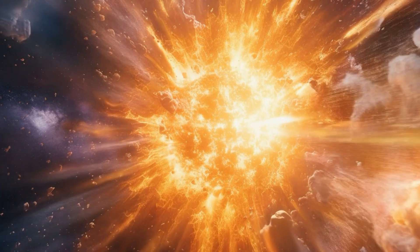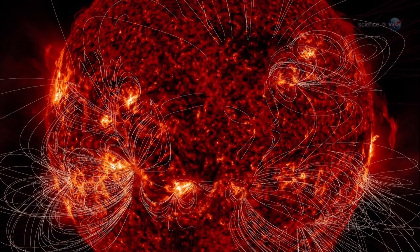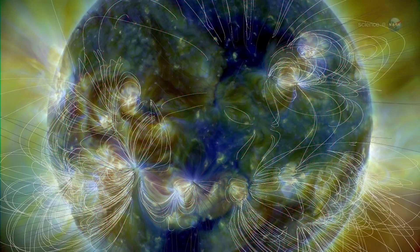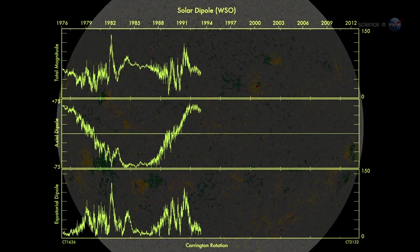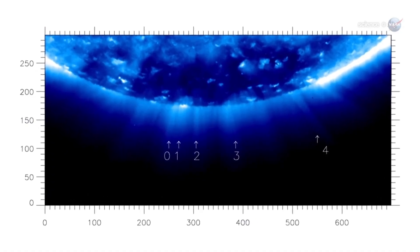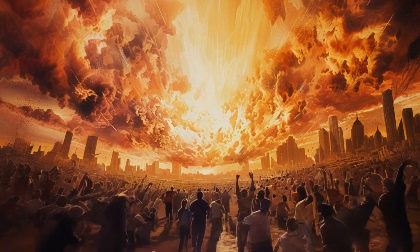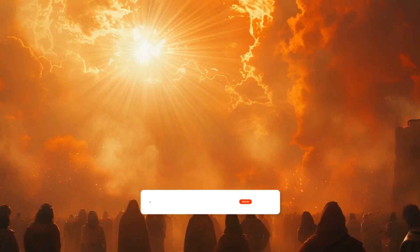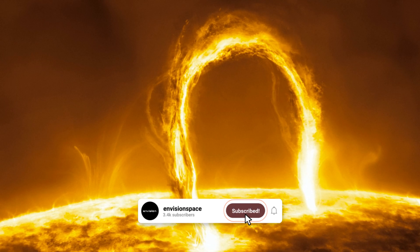Our sun is now behaving even more violently than scientists had predicted earlier. A surprise announcement from scientists involved in monitoring the solar cycle has finally confirmed that the sun's most active and dangerous phase, solar maximum, is already well underway. And the worst may still be yet to come.